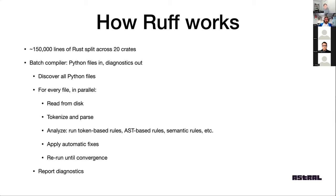We lint every single file independently, and we lint and fix files until convergence. At the end, we print out all the remaining diagnostics — that'll include code frames. So we'll say this import was unused, here's what it looks like in the code. This is a high-level description of how Ruff works today.